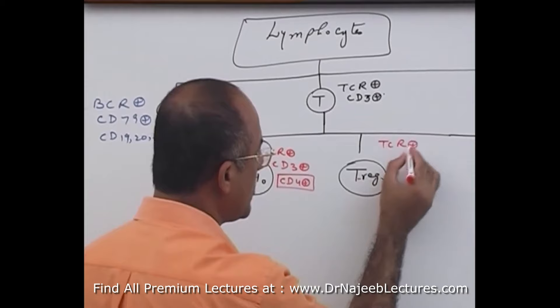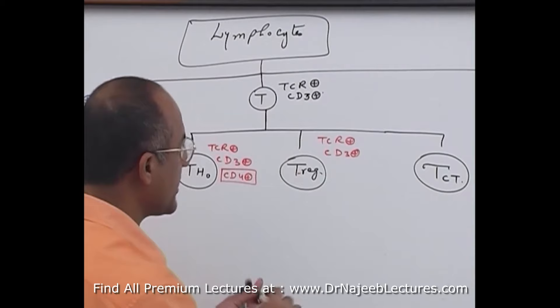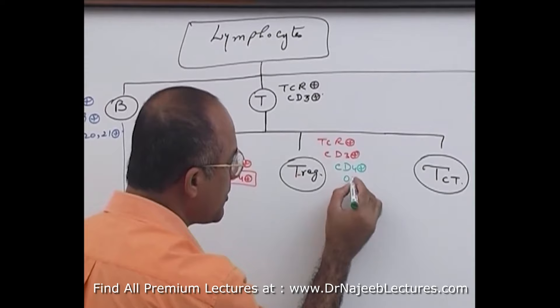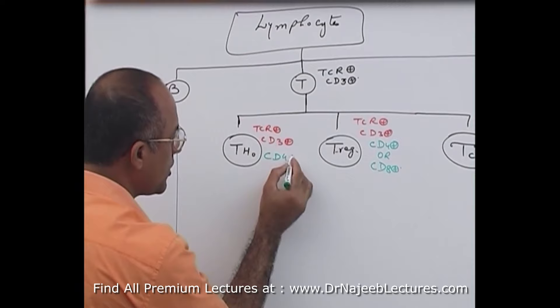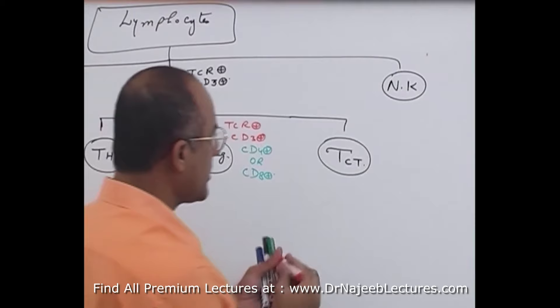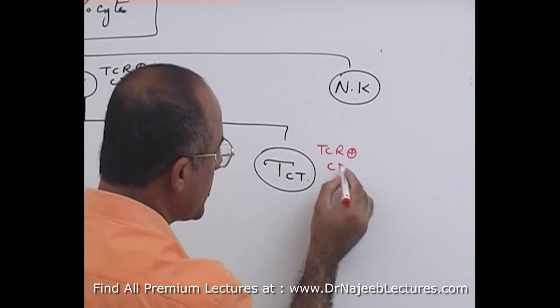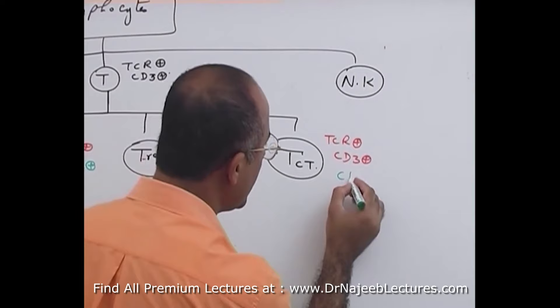T regulatory cells are TCR positive and CD3 positive. Some T regulatory cells are CD4 positive and some are CD8 positive. T helper cells are strictly CD4 positive. T cytotoxic cells are TCR positive, CD3 positive, and CD8 positive.